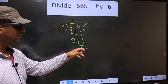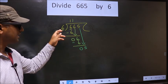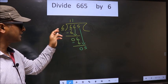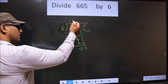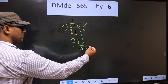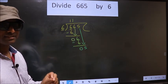Here we have 5, here 6. 5 is smaller than 6. So what many do is they put a dot and take 0 here, which is wrong.